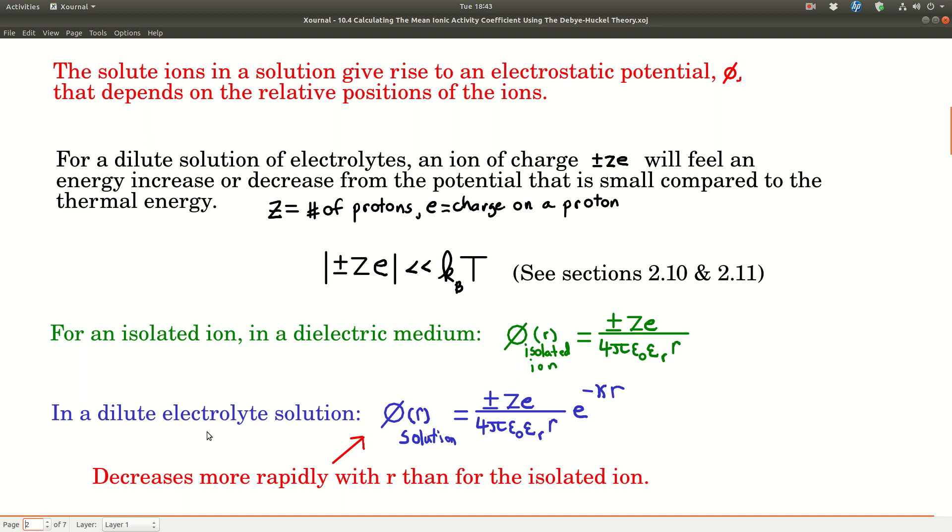For a dilute solution of electrolytes where the ions have the charge ±Ze, where Ze is the number of protons in the nucleus and e is the charge on the nucleus, they'll feel an energy increase or decrease from the potential that's small compared to thermal energy. We say the absolute value of Ze phi is much less than kBT, where kB is Boltzmann's constant and T is the temperature in Kelvin.